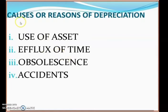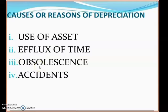There are four major causes of depreciation: use of asset, efflux of time, obsolescence, and accidents. Due to accidents, the capacity or value of an asset decreases. Obsolescence means the asset has become outdated. Efflux of time means long use of the product. And continuous use causes wear and tear, reducing the asset's capacity — all of which require charging depreciation.